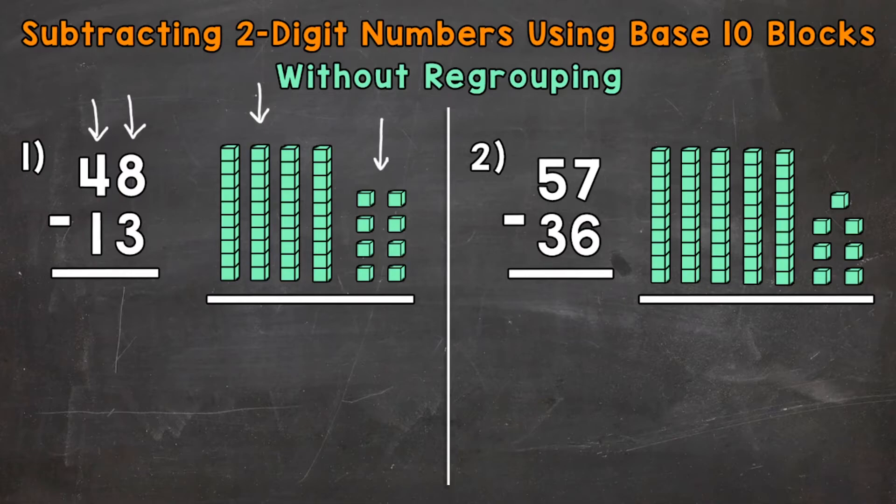Now we need to subtract or take away 13. When we subtract whole numbers we start with the ones place. So 8 ones minus 3 ones. Let's subtract or take away 3 from the 8 ones: 1, 2, 3. Now we see how many we have left: 1, 2, 3, 4, and 5. So 5 goes in the ones place in our answer.